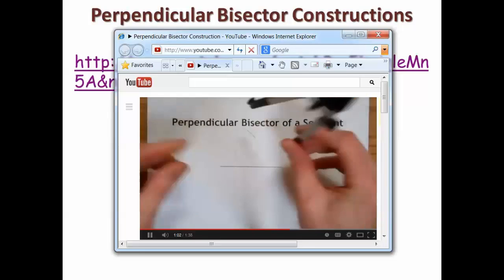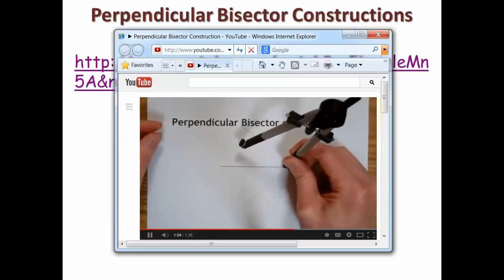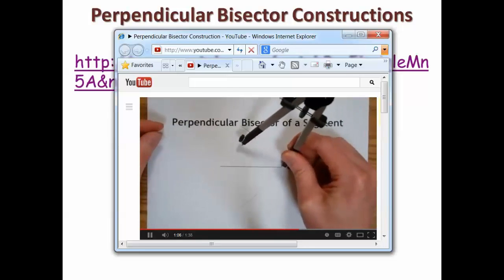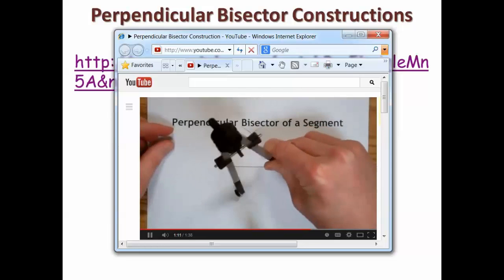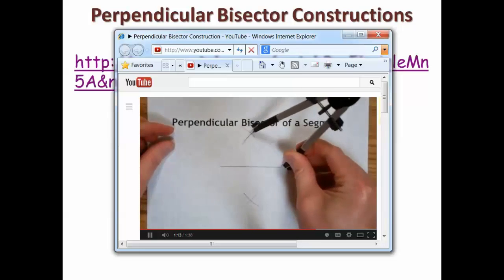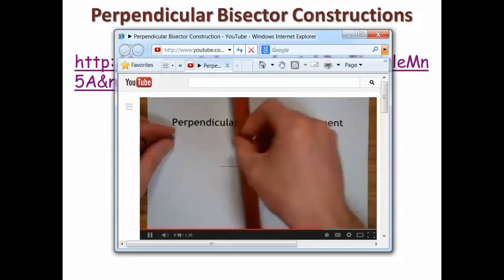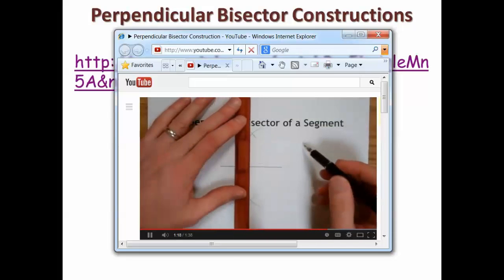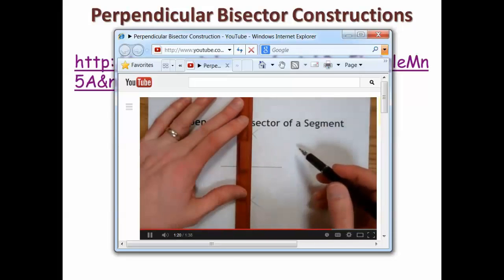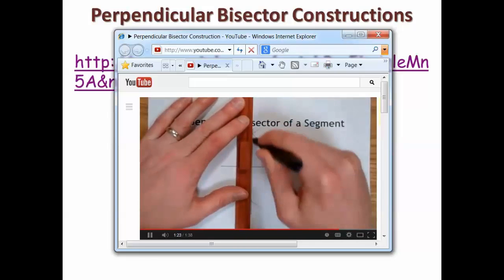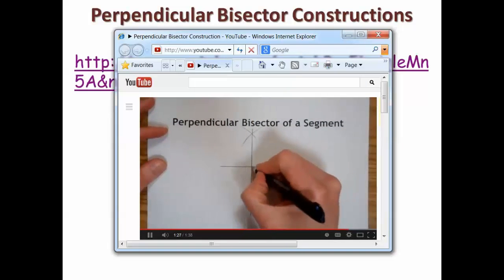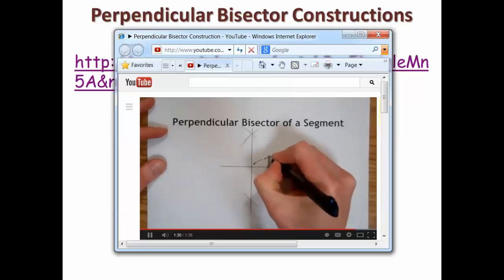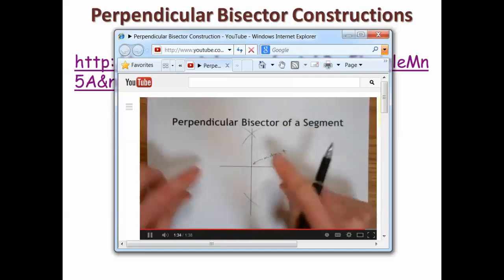I'm going to make an arc above and below the line with my point stabbed into one endpoint. I'm going to move my point to the other endpoint, stab it in, and make intersecting arcs above and below the segment. Then I use my straightedge to connect those two intersections and that's my perpendicular bisector. Here's the 90 degree angle and this is the midpoint of this segment.